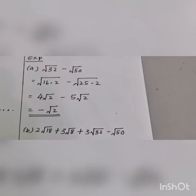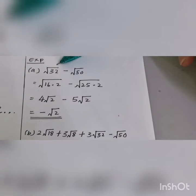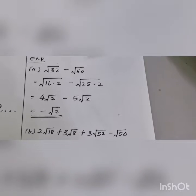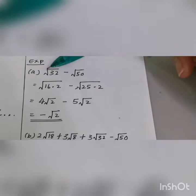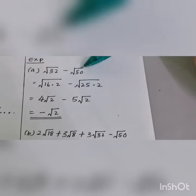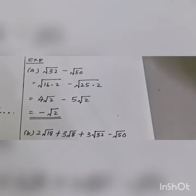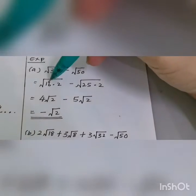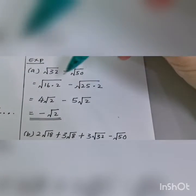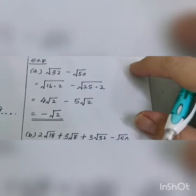For example: simplify square root of 32 minus square root of 50. Break them down — 32 is 16 times 2, and 50 is 25 times 2. Both 16 and 25 are perfect squares, so make sure one of the numbers is a perfect square.